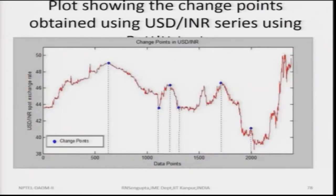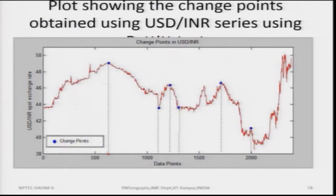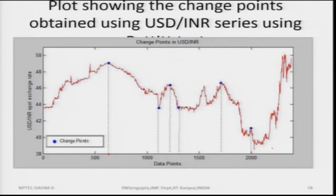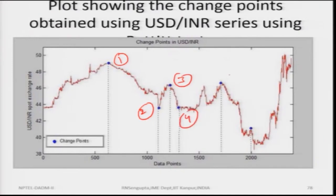Earlier points were marked arbitrarily; now using change point detection with the Pettitt test, the change points for USD/INR are identified. The change point occurs around data point 600, three change points occur between data points 1000 and 1500, one around 1700, and another around 2000. So in total, from 2000 to 2009, the number of change points detected is 6.